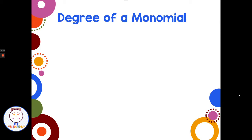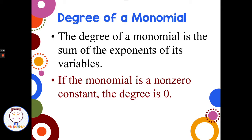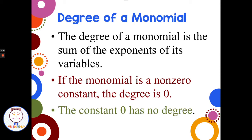Now let's look at the degree of a monomial. The degree of a monomial is the sum of the exponents of its variables — write this down as a key concept. If the monomial is a non-zero constant like 6, 8, or 17, the degree is zero. And if we have the constant zero, it has no degree because anything times zero goes away.